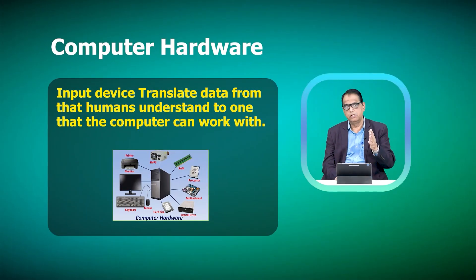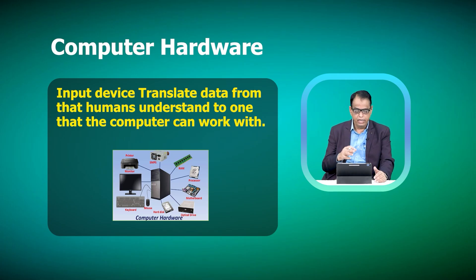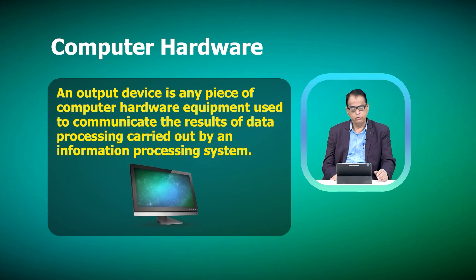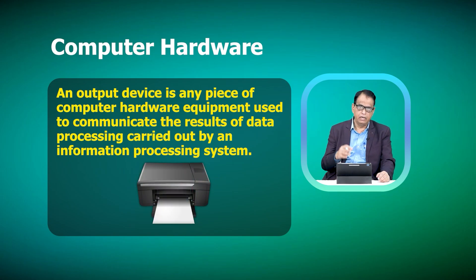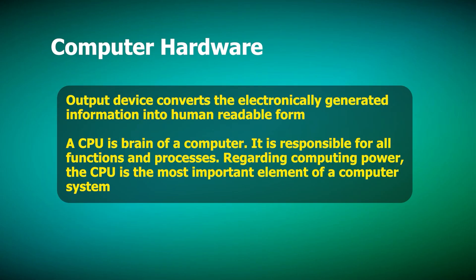Input devices are those used to transfer data to the computer system. Whenever humans interact with the computer system, they need an input device. The most common input devices are the keyboard and the mouse. Whenever output is generated by the computer system, it can be displayed on the screen, making the screen an output device. If you want to print it on paper, a printer can be an output device. The output device converts electronically generated information into human-readable form.